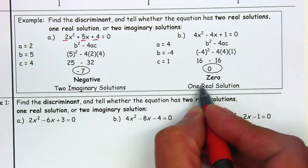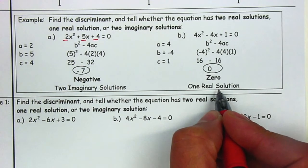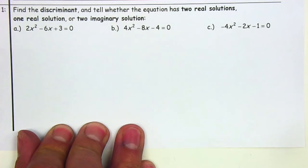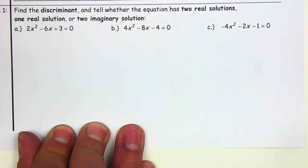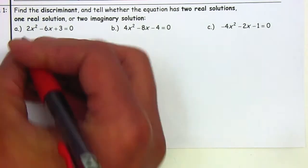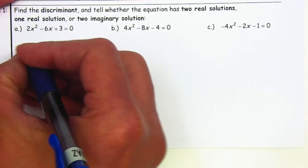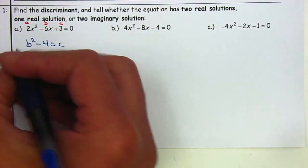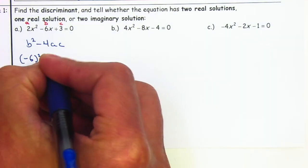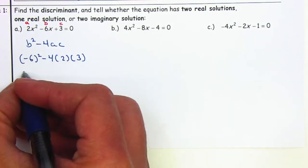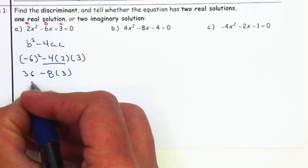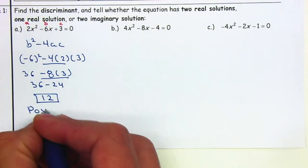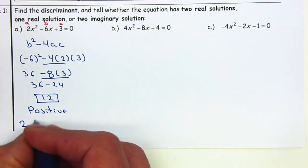If we plug it into the discriminant and we get 0, that means we're going to have one real solution. So let's look at example number one — finding the discriminant to decide whether it has two real solutions, one real solution, or two imaginary solutions. For letter A, using b squared minus 4ac: A is 2, B is negative 6, and C is 3. Negative 6 squared is 36, minus 4 times 2 times 3 gives 36 minus 24, which equals 12. Since 12 is positive, we have two real solutions.